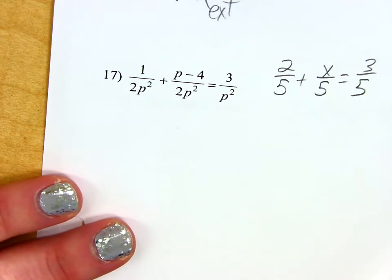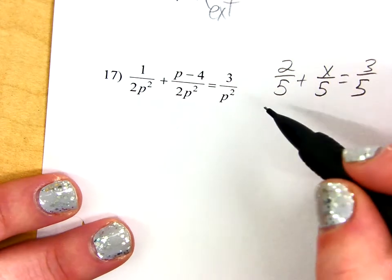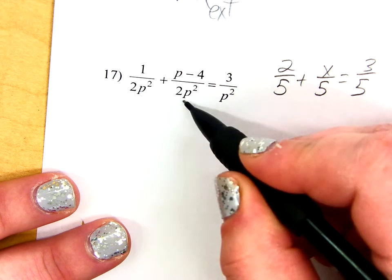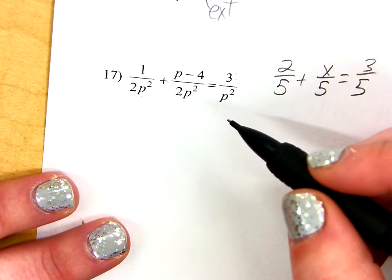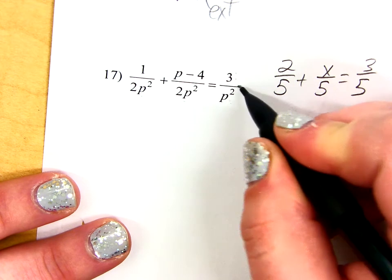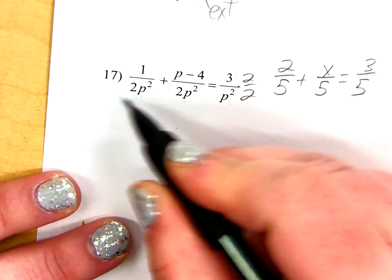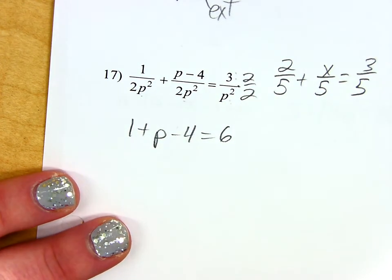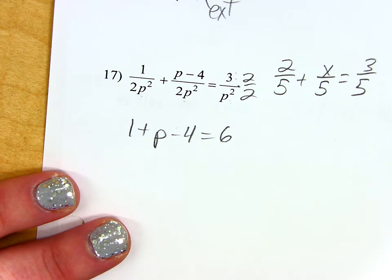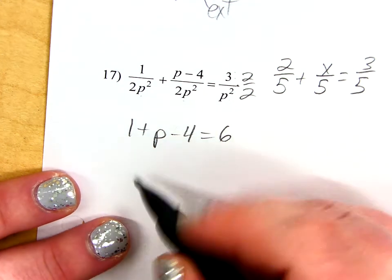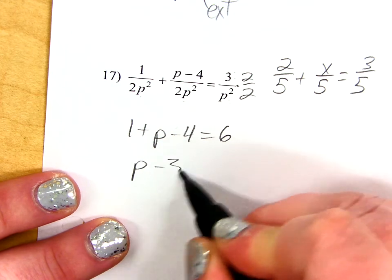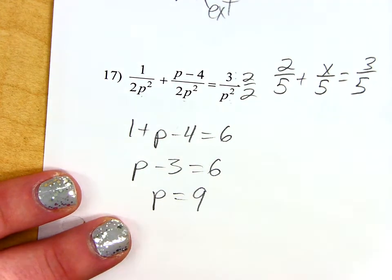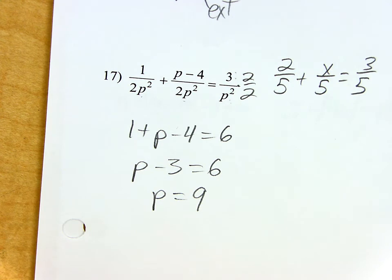So if I look back at 17, in order to get all of these denominators the same, we're pretty lucky because these two already match. This one would just need to be multiplied by 2/2. Does that make sense? So now I can literally ignore the denominators for a second and I'm just going to solve that. Well, that's a whole lot easier than what appears on this paper, right? So that's just p minus 3 equals 6. So I get 9. Did you? Good. And 9 does not turn any denominators into a 0, so I'm fine.